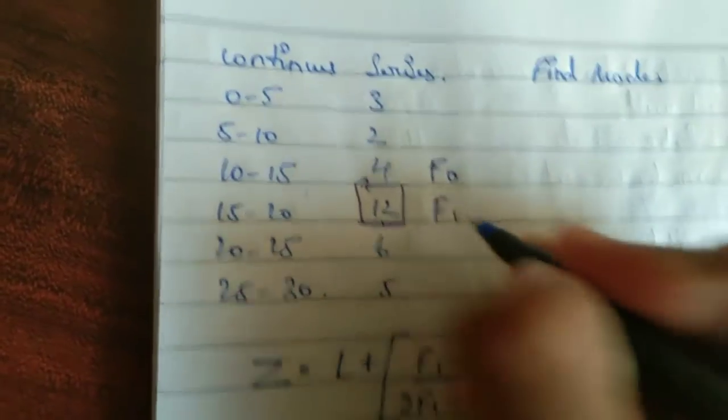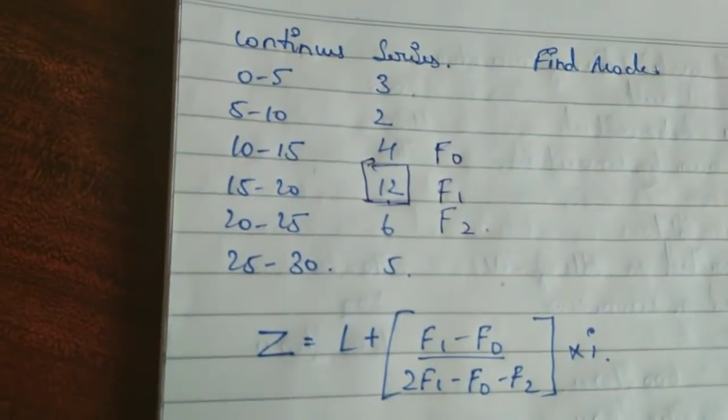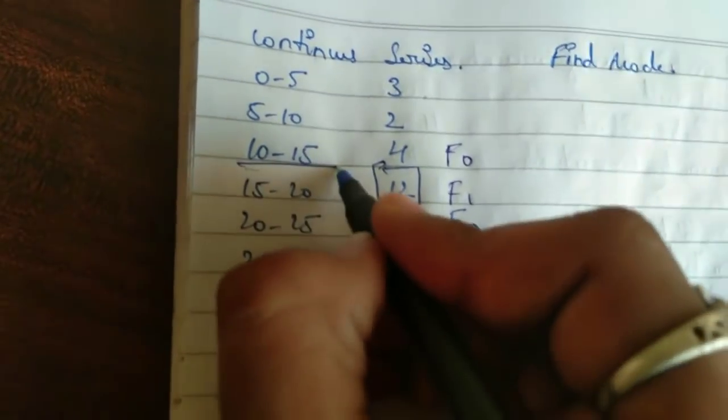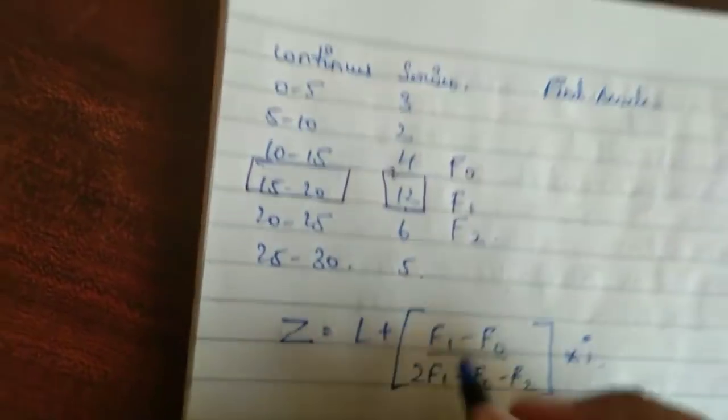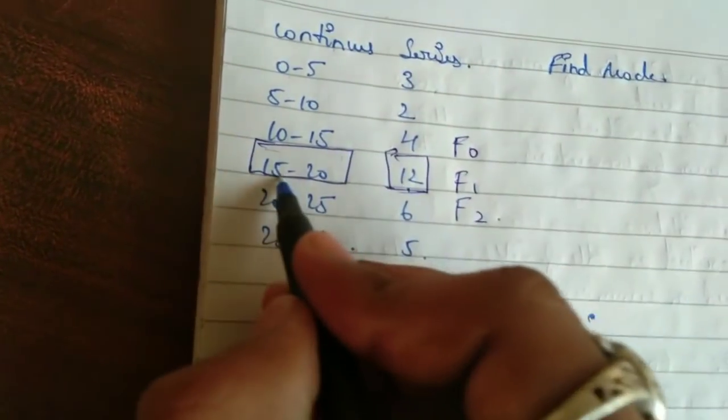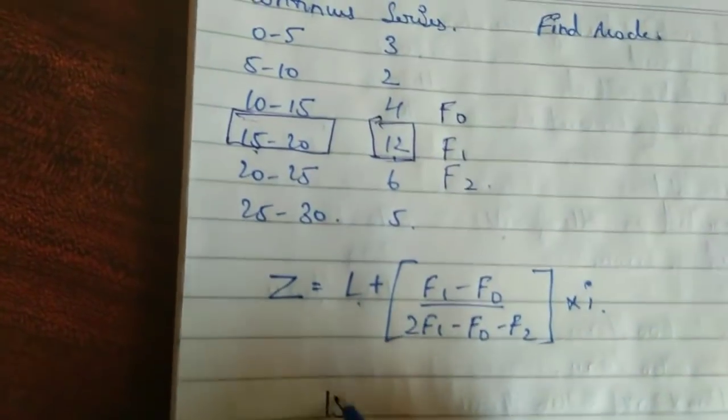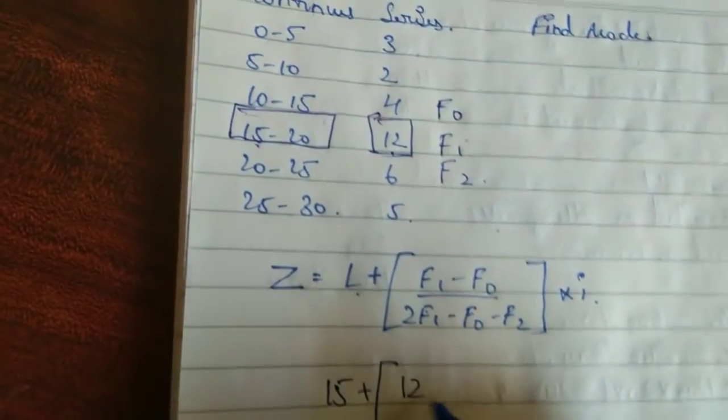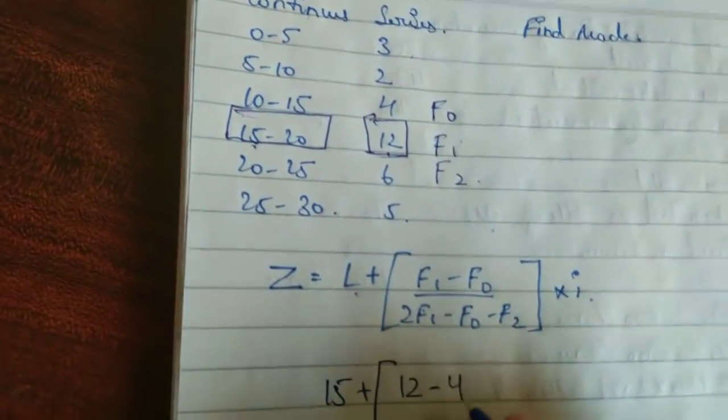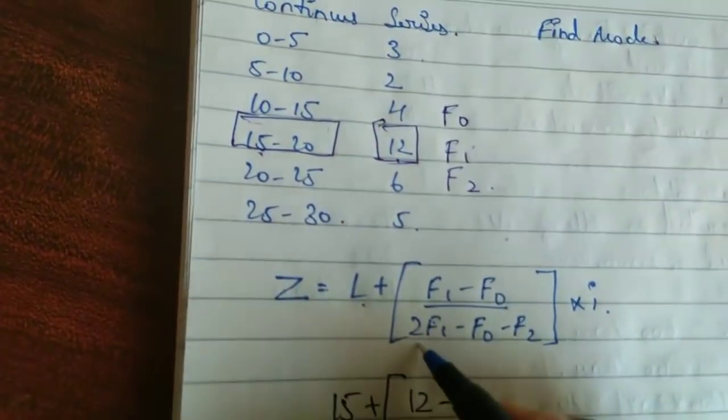F₁, F₂, and mark the below class interval also. And how you will put this in number? Let's see. L as the starting number of this, so 15 plus bracket F₁, 12, F₀, 4, so F₂.